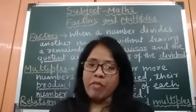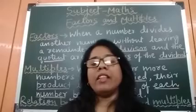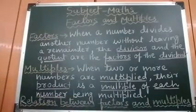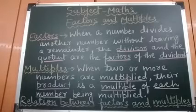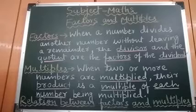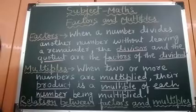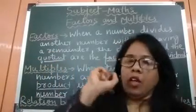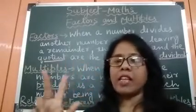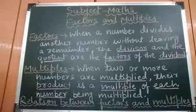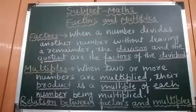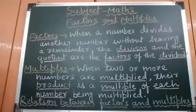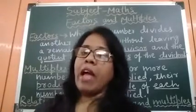Today we are going to learn about factors, then we will know about multiples, and then we will know the relation between factors and multiples. So first, what are factors? When a number divides another number without leaving a remainder, the divisor and the quotient are the factors of the dividend. For example, 12 divided by 2 gives 6, so 2 is the divisor and 6 is the quotient — therefore 2 and 6 are factors of 12.